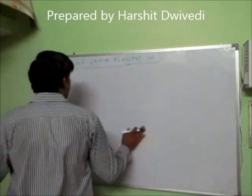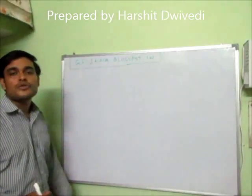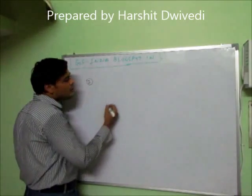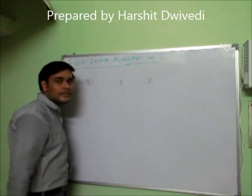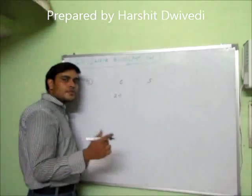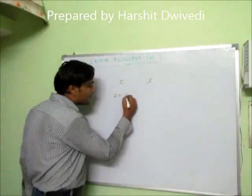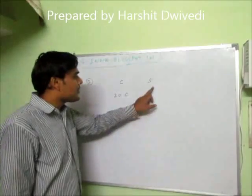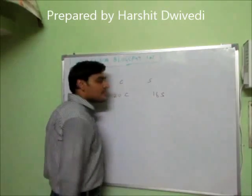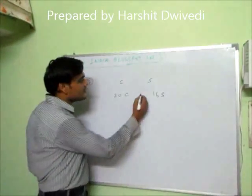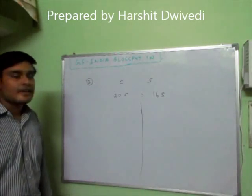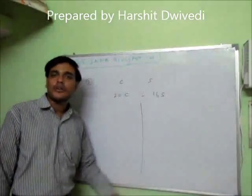Now the next question: the cost price of 20 articles is equal to the selling price of 16 articles. So I suppose the cost price of one article is C and selling price is S. The cost price of 20 articles will be 20C, and the selling price of 16 articles will be 16S. The question says these two things are equal. Now there are two methods — one is the longer method and one is the shorter method. First look at the longer method.